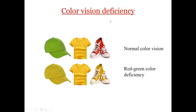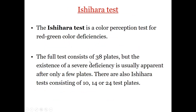For example, if a person has green color deficiency or blindness and is shown green, yellow, and red objects, they will see all three objects as yellow and cannot distinguish between green and red.